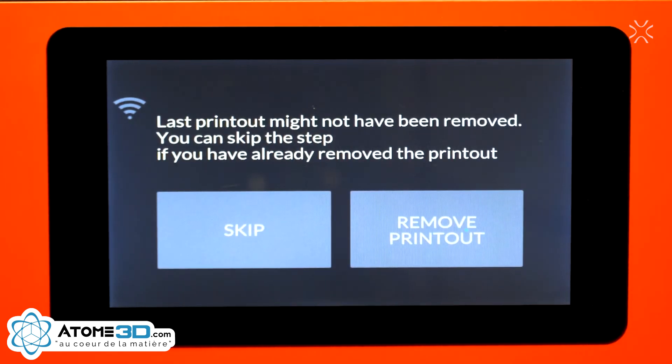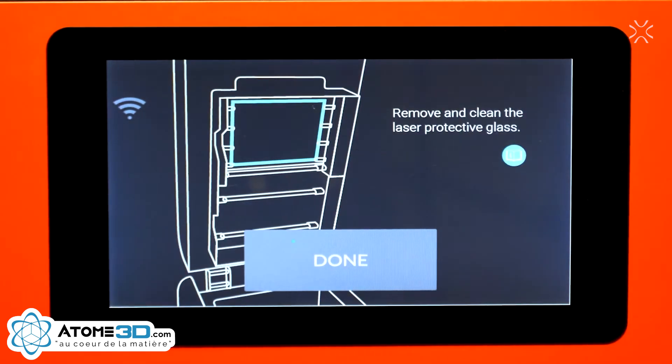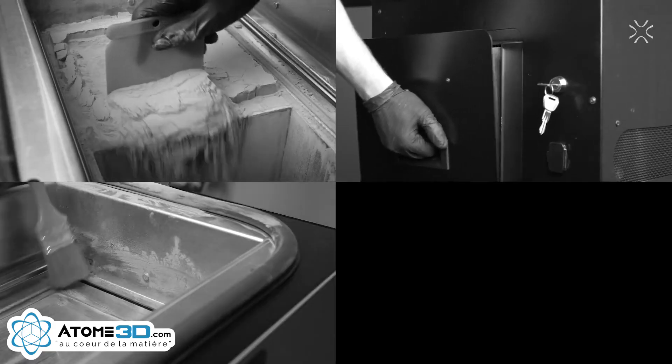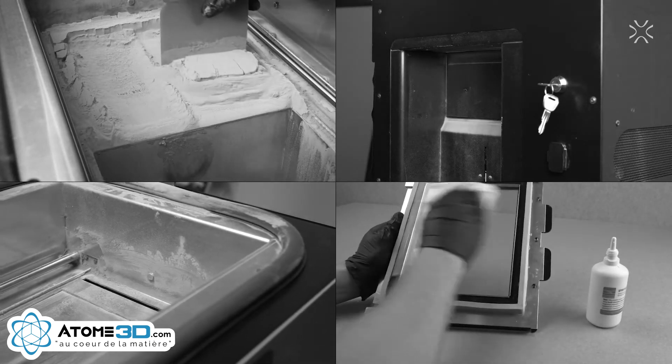Now you will be asked if the printout from your last print was removed. If so, just press the Skip button. If your last printout is still in the printer and you would like to know how to get it out and clean the printer, follow the link to the Cleaning Center at Lisa Pro 3D printer video. For this video, we just skip it.